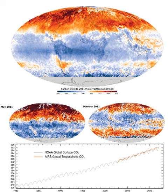Global annual mean CO2 concentration has increased by more than 45% since the start of the Industrial Revolution, from 280 ppm during the 10,000 years up to the mid-18th century to 415 ppm as of May 2019. The present concentration is the highest in the last 800,000 and possibly even the last 20 million years.